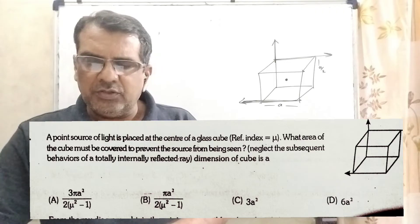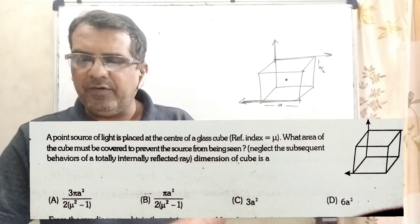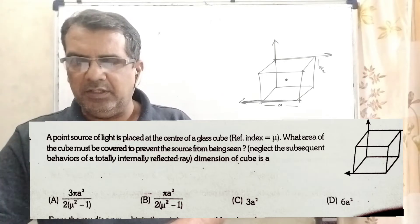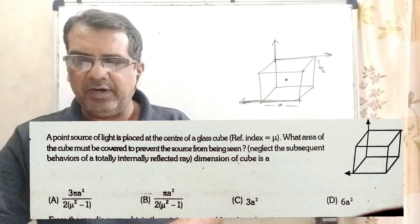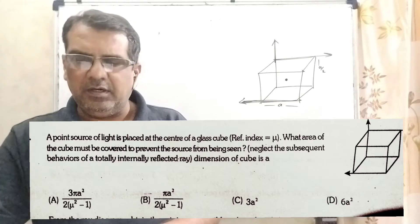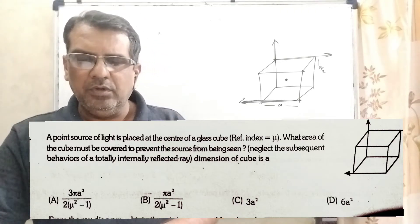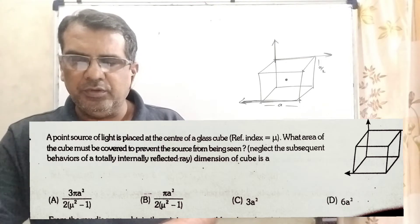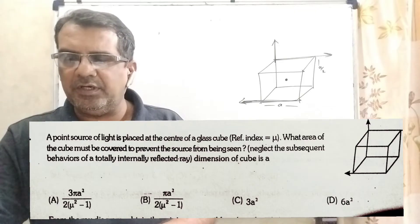Now here is the question. A point source of light is placed at the center of a glass cube with refractive index mu. What area of the cube must be covered to prevent the source from being seen? We neglect the subsequent behavior of the totally internally reflected ray. The dimension of the cube is 'a'. Options: (a) 3πa²/[2(μ²−1)], (b) πa²/[2(μ²−1)], (c) 3a², (d) 6a².